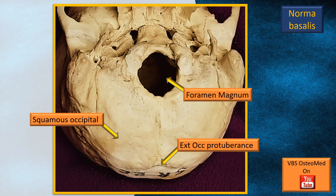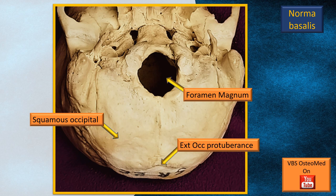Other than the foramen magnum, the squamous occipital — the flat part of the occipital bone — forms the bulk of this surface. With the exception that at the lateral edges, a small part of the mastoid temporal is seen. Therefore, the squamous occipital is the major area, with an element of the mastoid process of the temporal bone at the periphery.